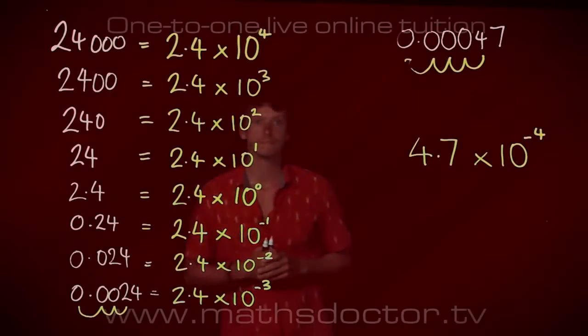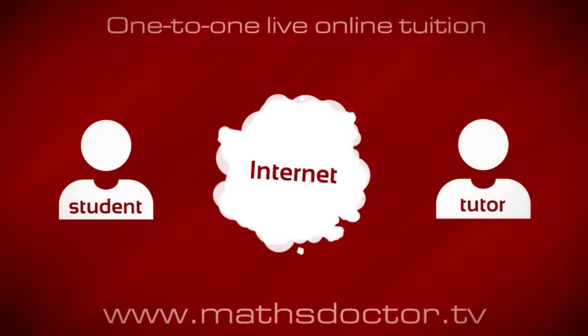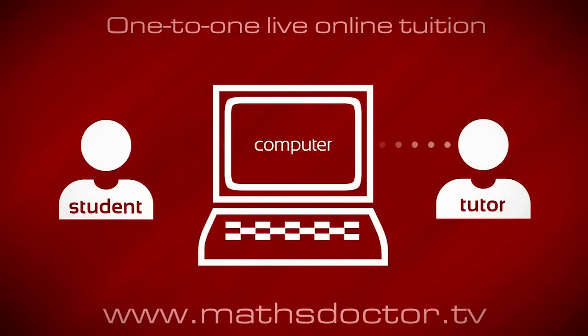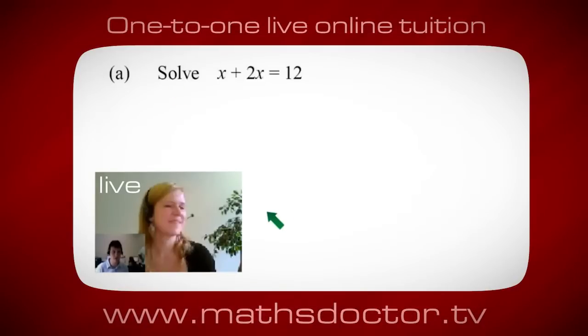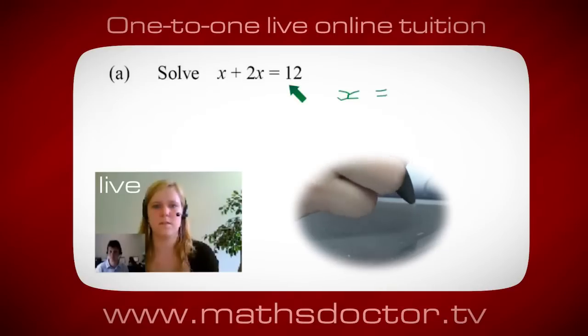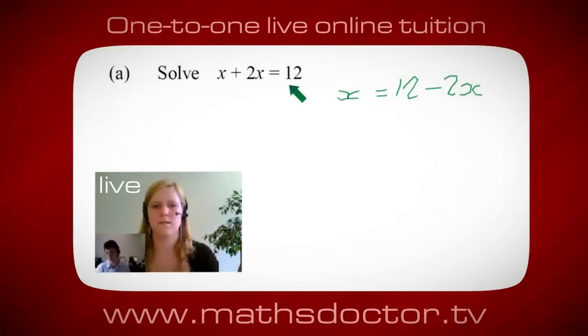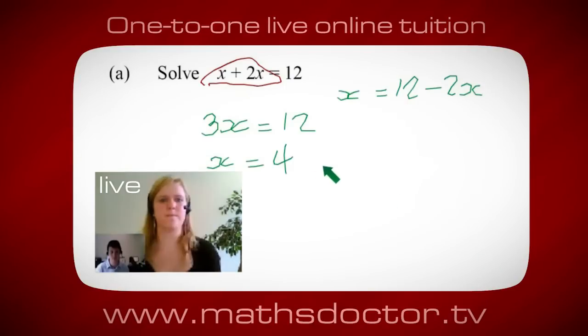Let's have a look at this one: solve x plus 2x equals 12. What do you think you'd do first? Well, I want x on its own, so I would put x equals 12 minus 2x. A lot of the time we want to get x by itself, but what we want to do first is get all of these x's together. Can you see anything we can do? It's 3x, isn't it? Yeah, absolutely. 3x equals 12, so x equals 4. Brilliant, spot on, well done.